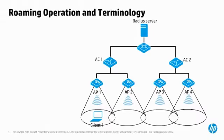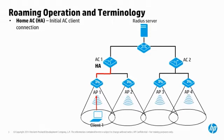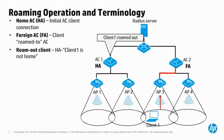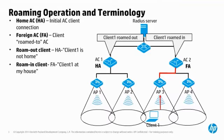The AC in control of the AP that a client initially associates to is called the Home AC or HA. The client authenticates via this AC, and the AC stores client authentication status and parameters. It synchronizes this info to other ACs in a mobility group. The client then roams to AP3, which is controlled by AC2, making AC2 the Foreign AC or FA. AC1 now perceives the endpoint as a roam-out client, while AC2 sees it as a roam-in client.